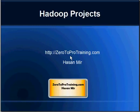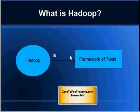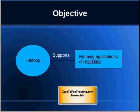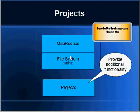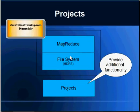Hello, in this session we will talk about Hadoop projects. This is Hasan Meir from zerototoprotraining.com. From the previous videos we understand that Hadoop is a framework of tools and the objective is to support running applications on big data. Two main components of Hadoop are MapReduce and the file system. However, there are a few projects managed by Apache that also fall under the umbrella of Hadoop, and these projects add certain value to the core functionality at multiple levels.